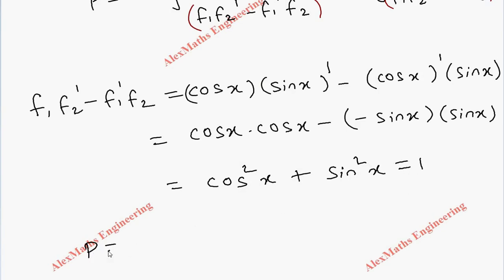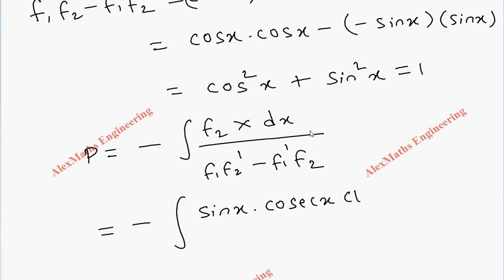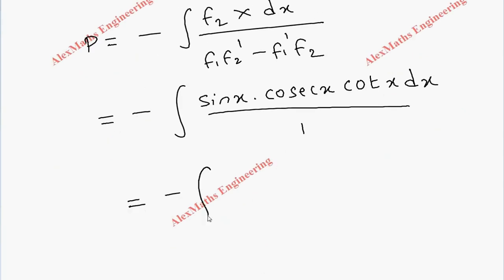Now coming to P, the formula is -∫(f₂X dx)/(f₁f₂' - f₁'f₂). So f₂ is sin x times X which is cosecant x · cot x, dx, divided by 1. Cosecant x can be written as 1/sin x.